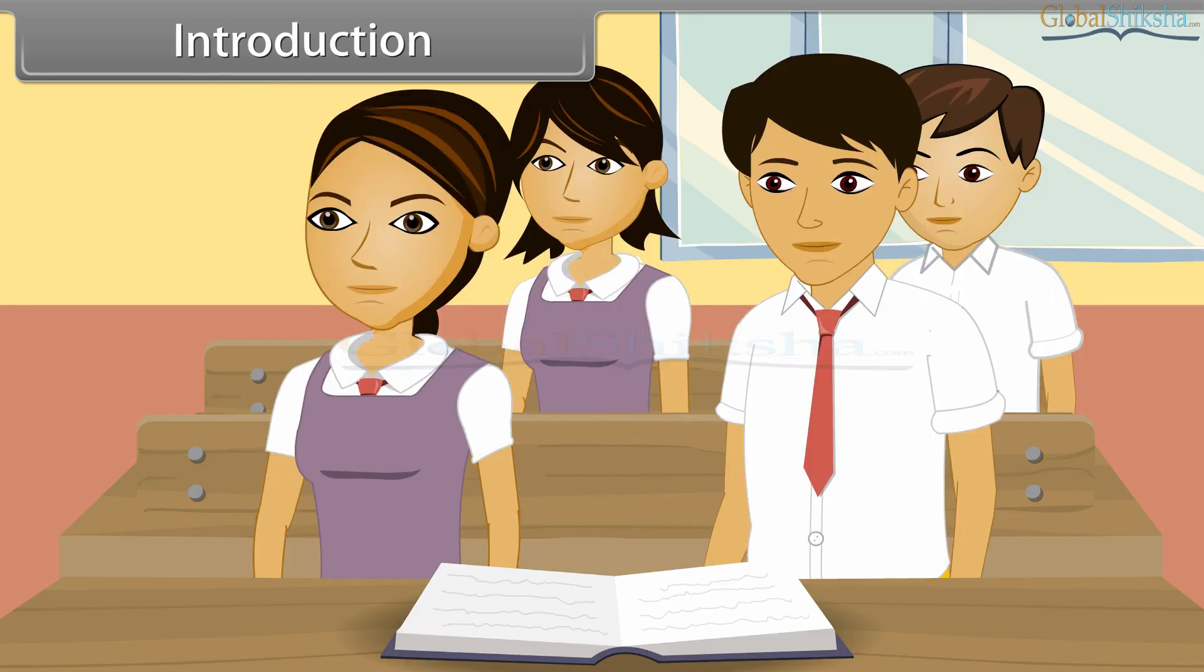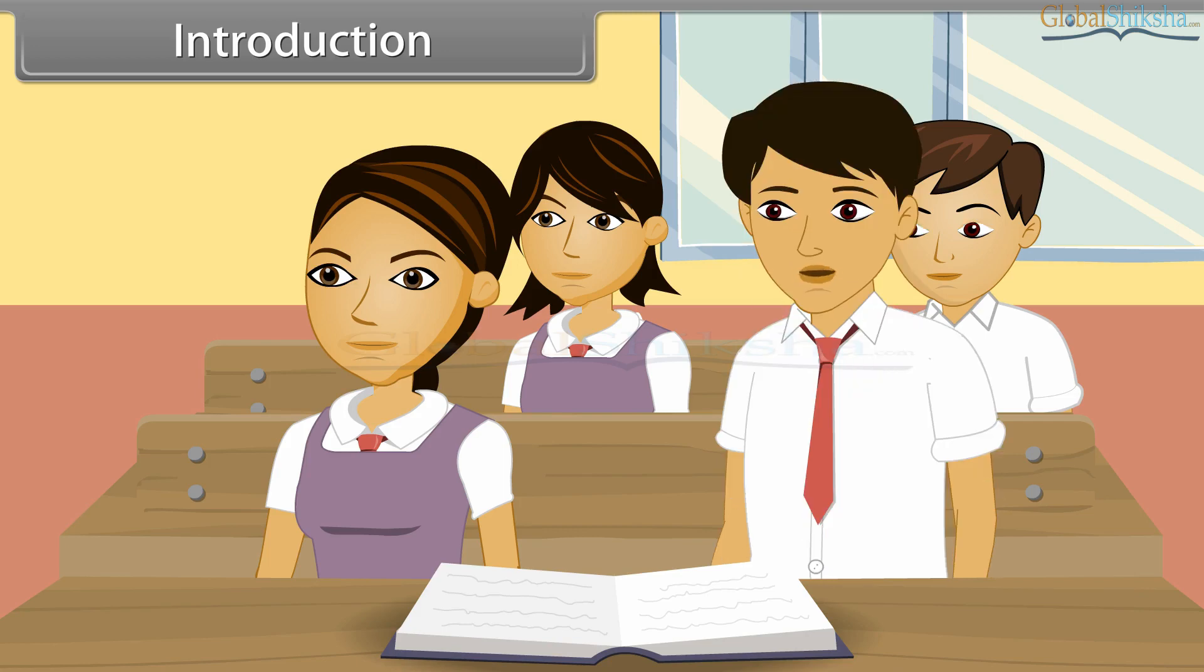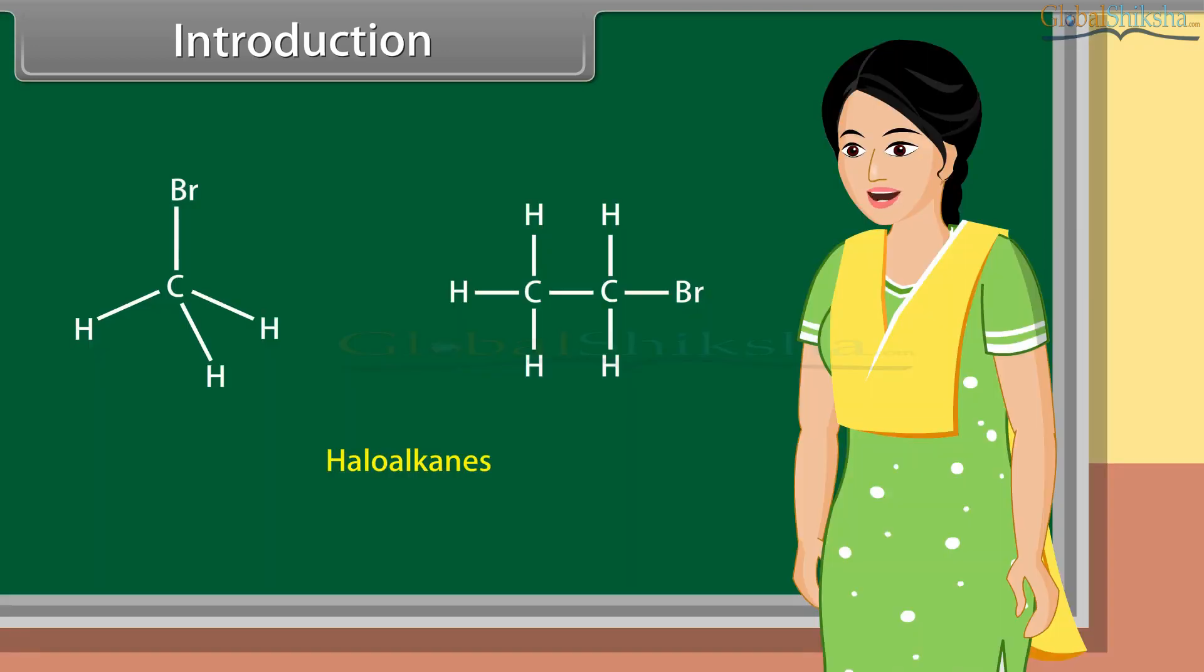Good morning, teacher. Good morning, students. Today we learn haloalkanes and haloarenes. Ma'am, what are haloalkanes? Haloalkanes are the chemical compounds in which one or more of the hydrogen atoms in an alkane have been replaced by halogen atoms.